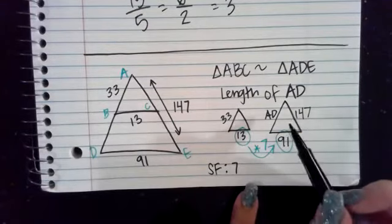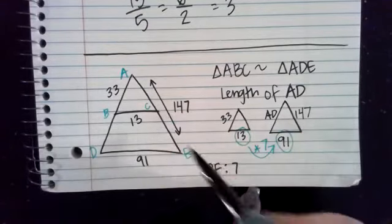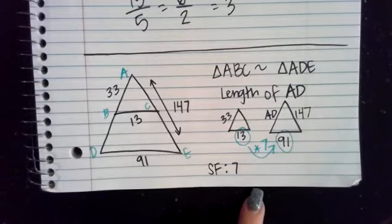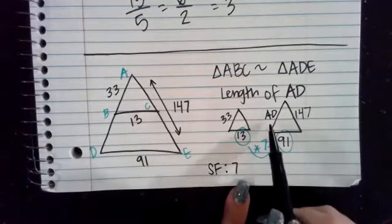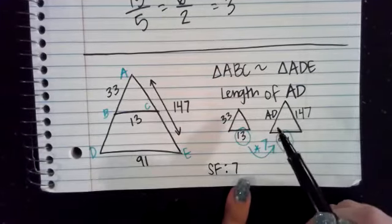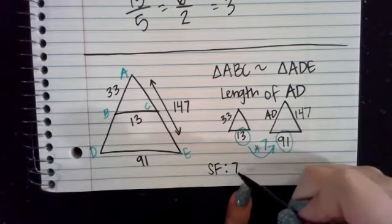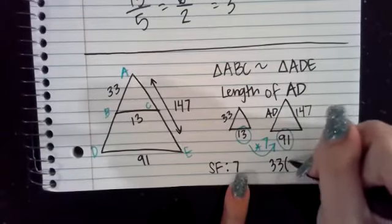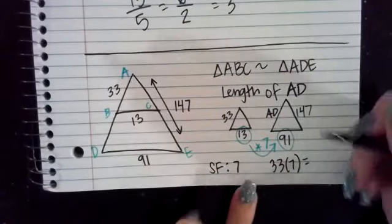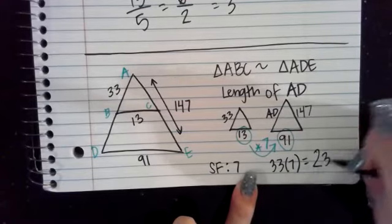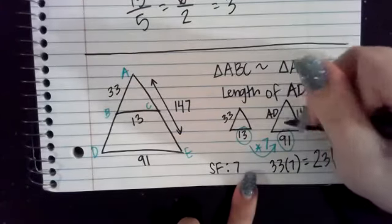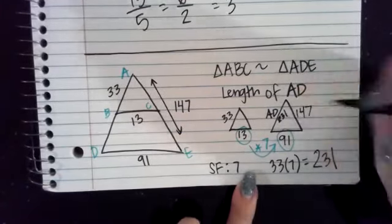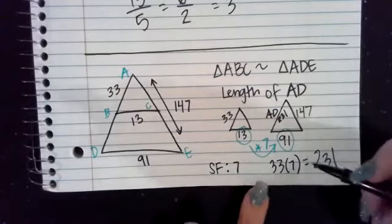So this particular triangle, this big triangle is seven times the size of this smaller triangle. So to figure out what AD is, I just need to take that scale factor of 7 and multiply it times 33. So 33 times 7 is equivalent to 231. So this particular side of the triangle is 231. So again, this is not an isosceles triangle.